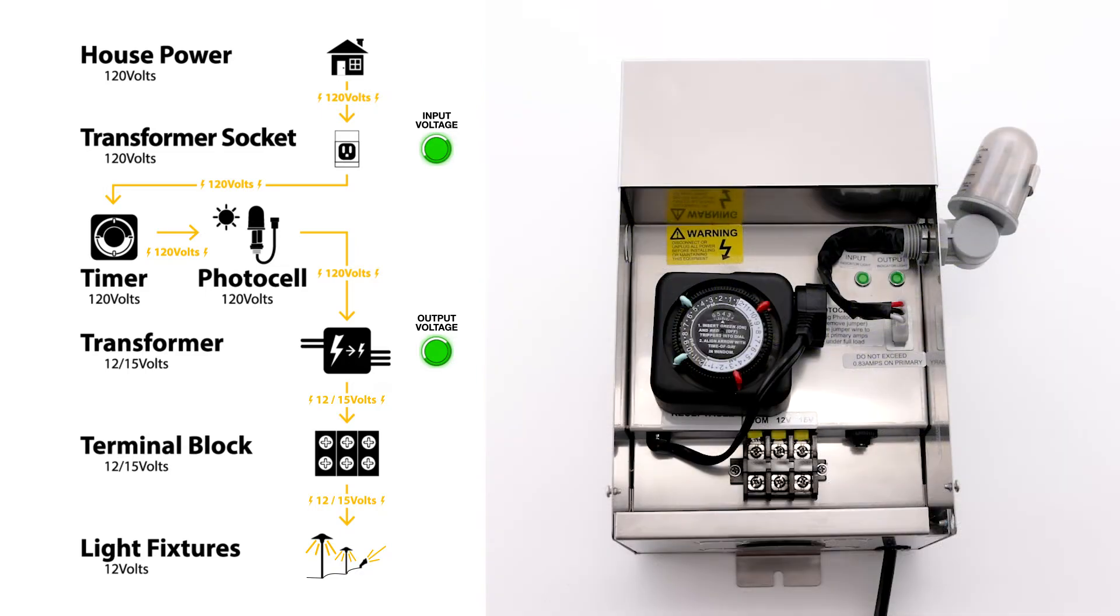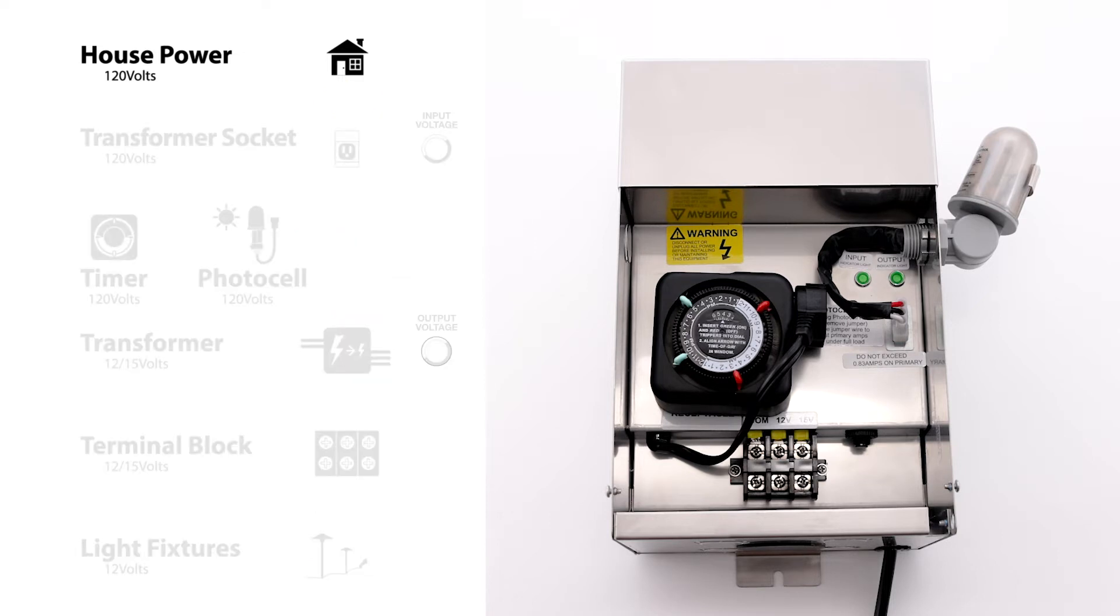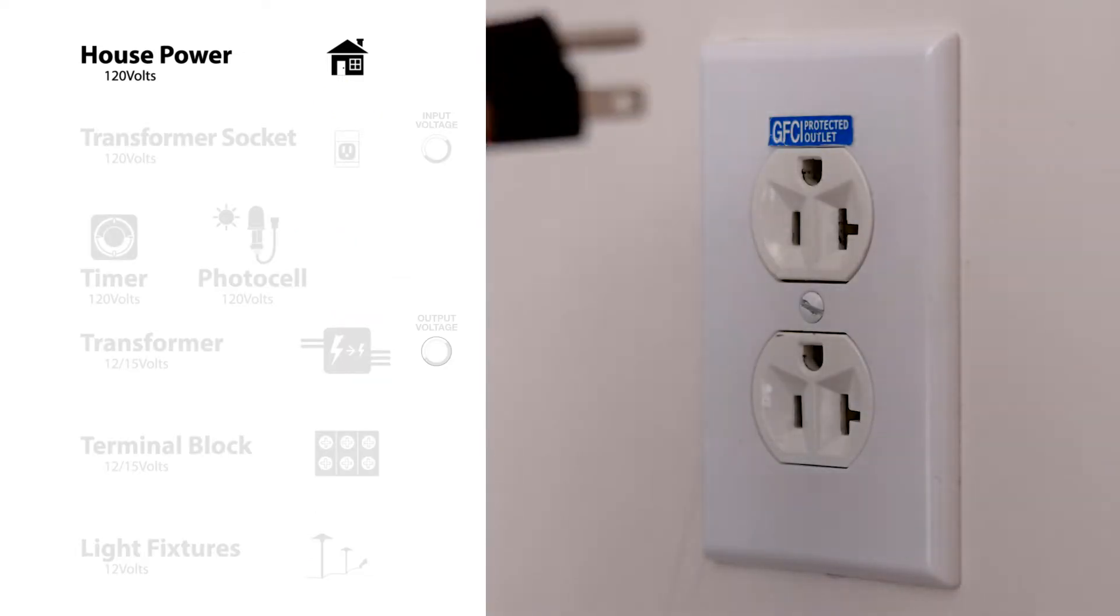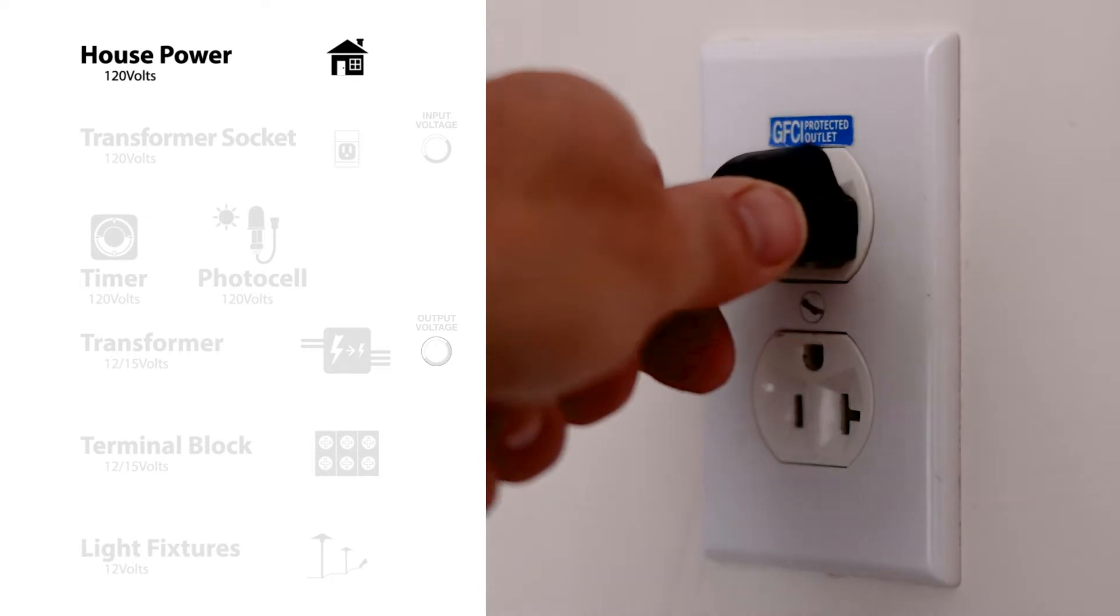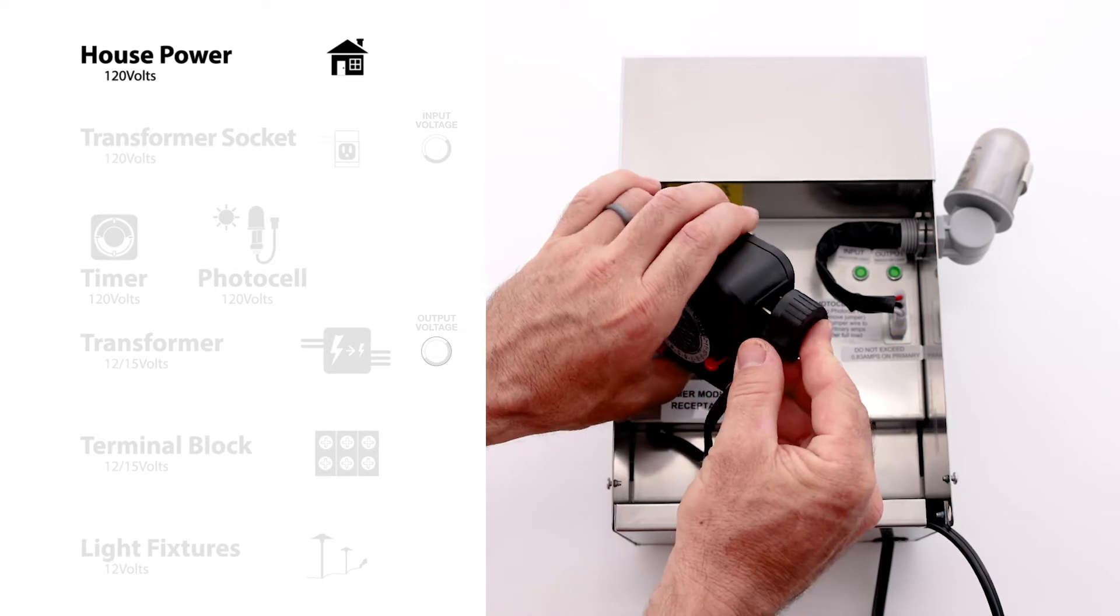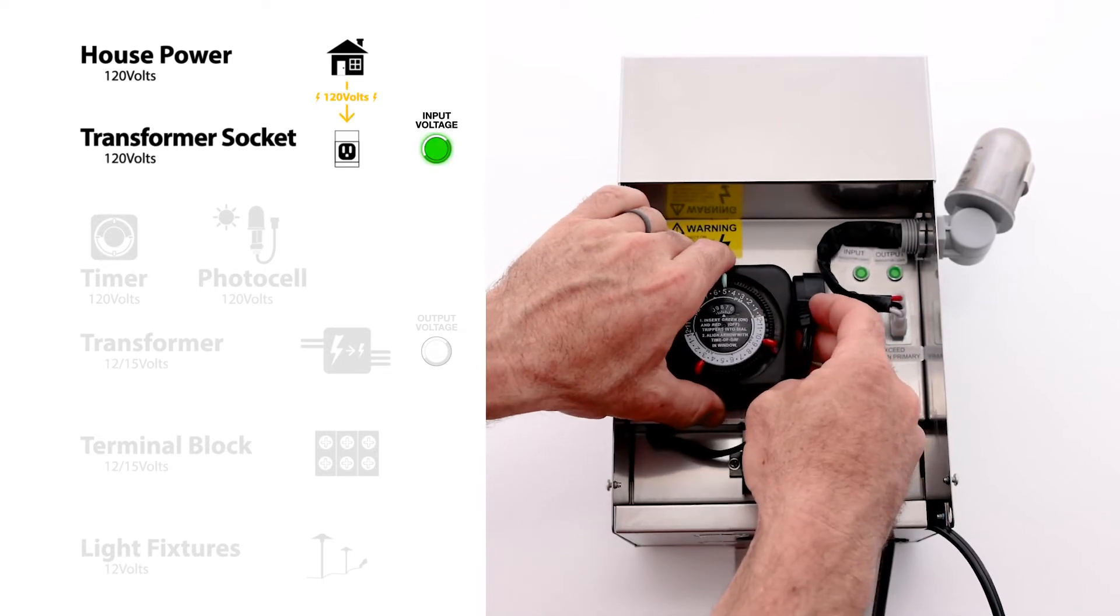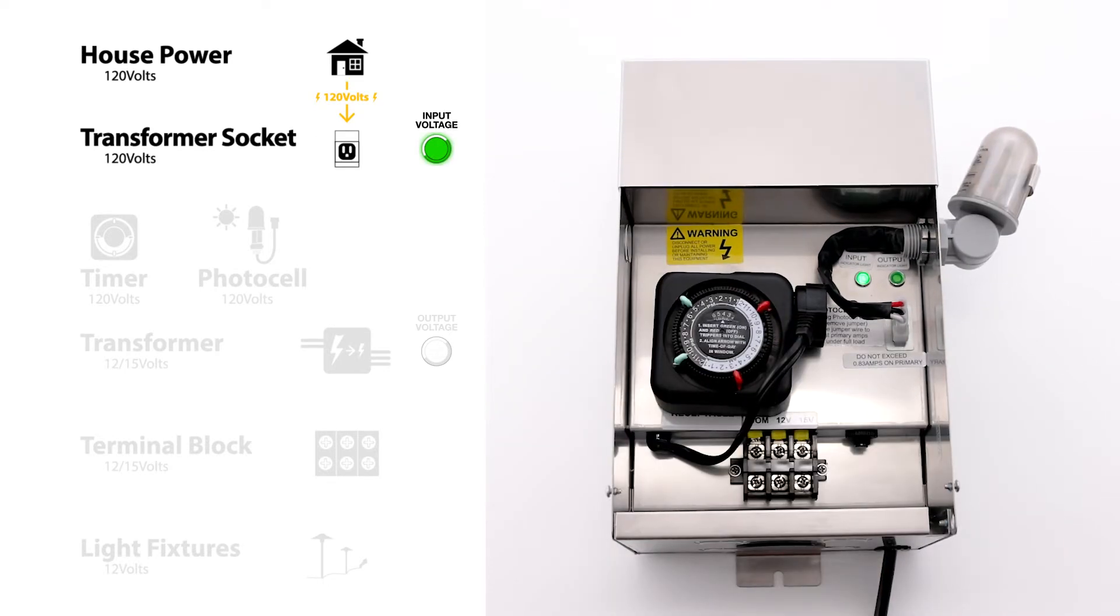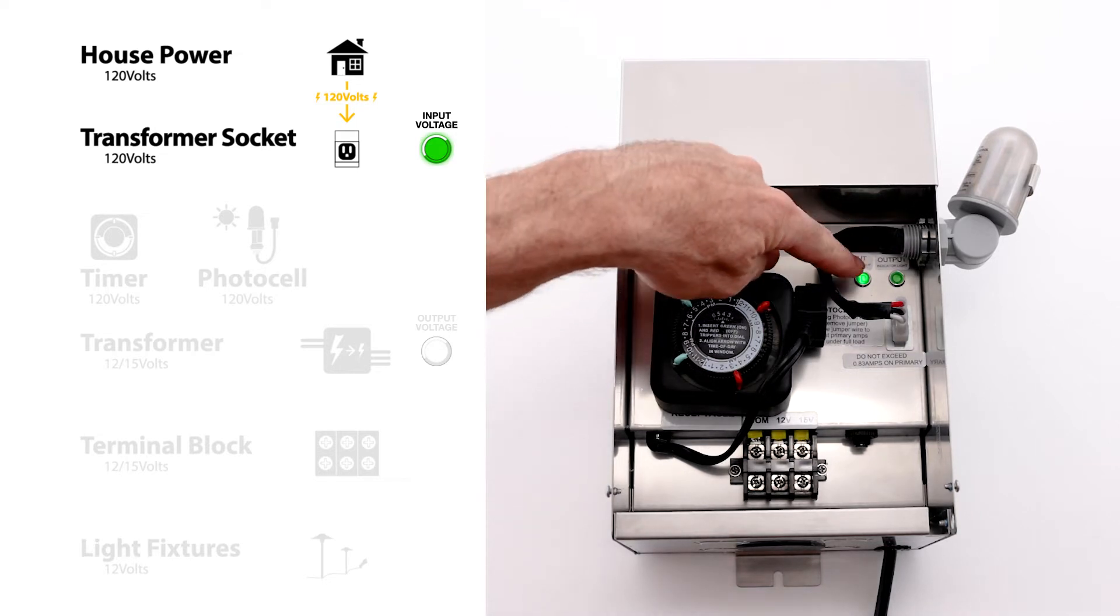Here's how power flows to your landscape lights when using a timer and photocell together. Again, power starts at your house. Hopefully there is a GFI to plug it into. If not, you may want to get one installed. As soon as it is plugged in, the power enters the unit at the socket. The first indicator light comes on. This way you know you have power at the unit.